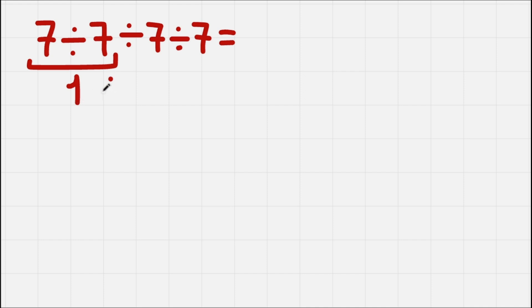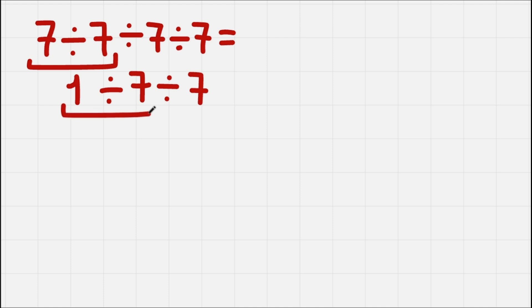And we're left with divided by 7, and divided by 7. Again, we work from left to right, so we have 1 divided by 7. If we divide, we'll get an uneven decimal, and we don't want that. It's much better to write this as a fraction — 1 divided by 7 — and not bother with all that rounding.